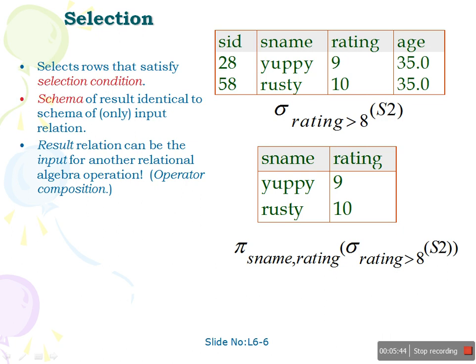In selection, if you want to filter any records, we use this operator. Based on the selection condition, the records are retrieved. For example, sigma rating greater than 8 from Sailors 2 retrieves all sailor details whose rating is greater than 8. The first two records returned are sailor ID 28 with rating 9 and sailor ID 58 with rating 10. The output is determined by the selection condition.